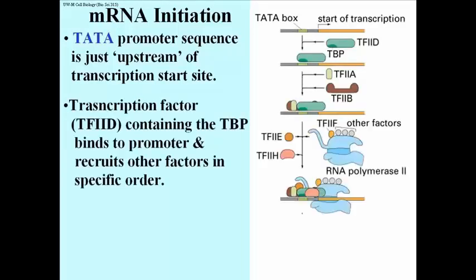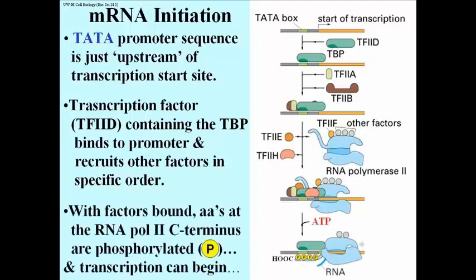The first protein to bind the promoter in this animation is called transcription factor TF2D. This starts a sequence of protein bindings, bringing other transcription initiation factors to the promoter in a specific order. One of the last proteins to add is RNA polymerase II, the polymerase responsible for messenger RNA transcription in eukaryotes. The last step in initiation is a phosphorylation event — the carboxyl end of RNA polymerase II gets those phosphates and becomes active, and the activated polymerase can begin new RNA strand transcription.